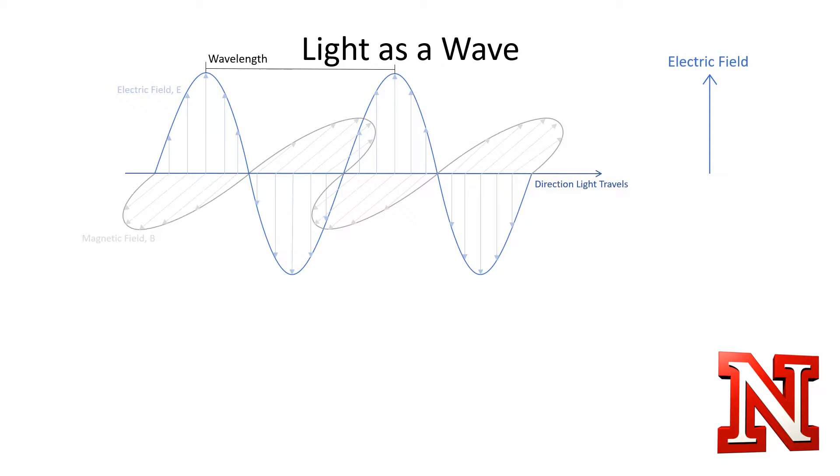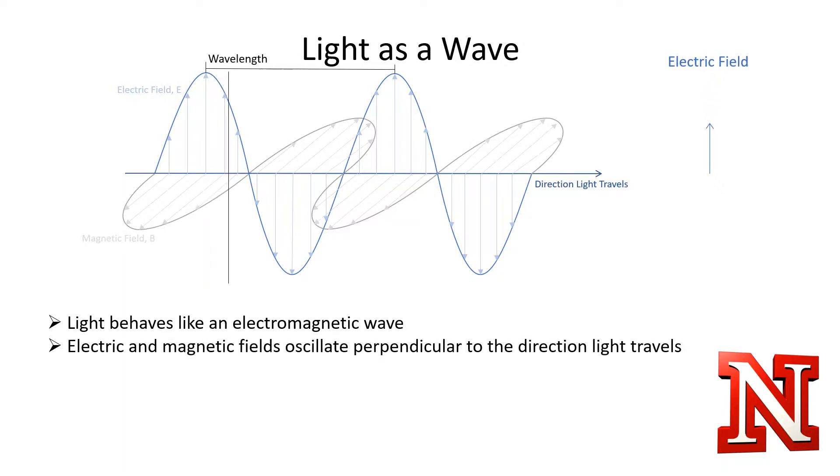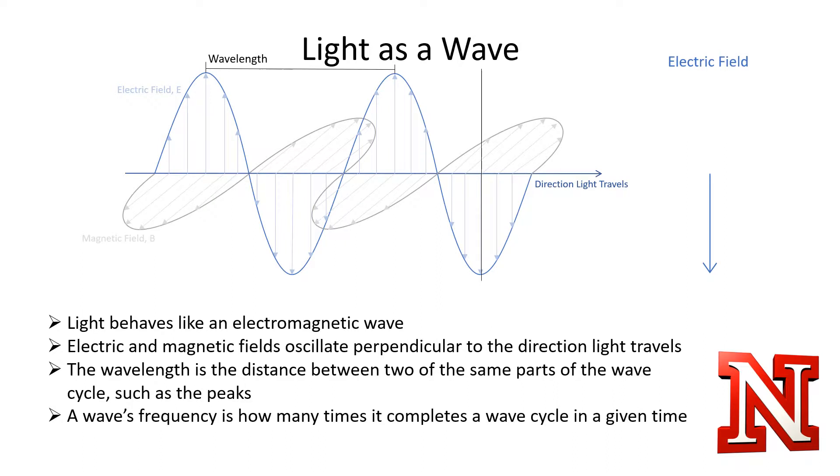In order to understand the Kerr effect, we must understand light as an electromagnetic wave propagating in the same direction that light moves. In an electromagnetic wave, electric and magnetic fields oscillate perpendicular to the direction of propagation and to each other. The wavelength is the distance between two equivalent parts on the waves, most often measured peak to peak, and however many times the wave travels through a wavelength in a given time period is its frequency.